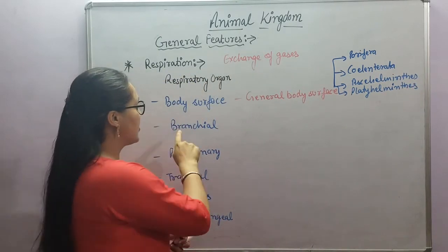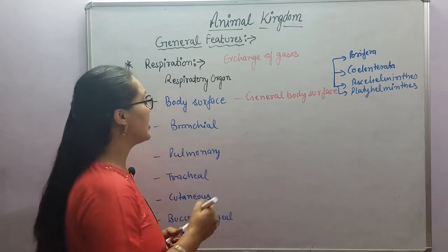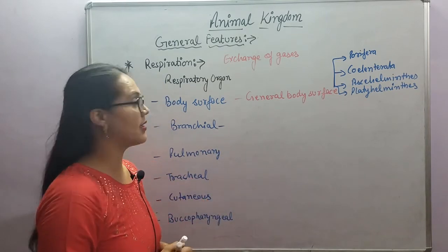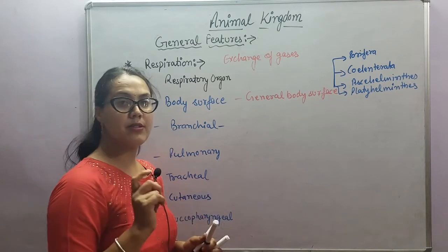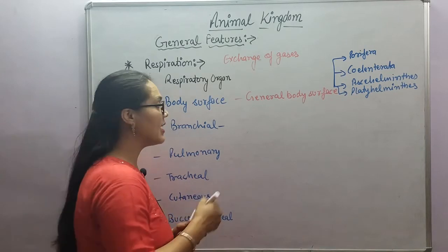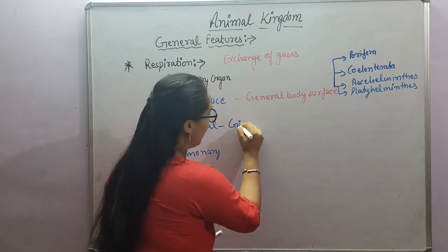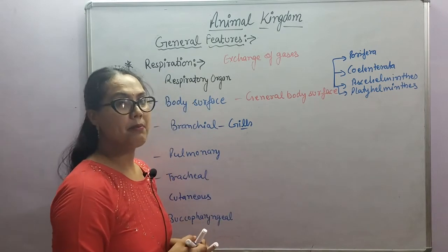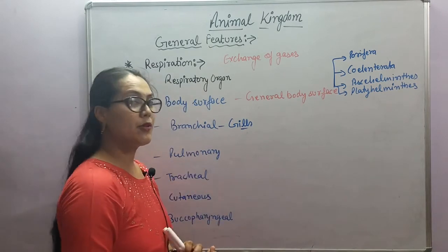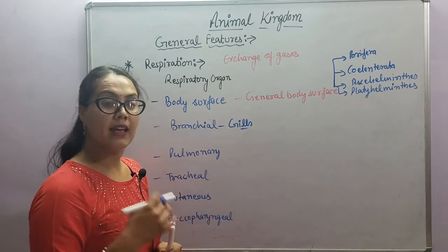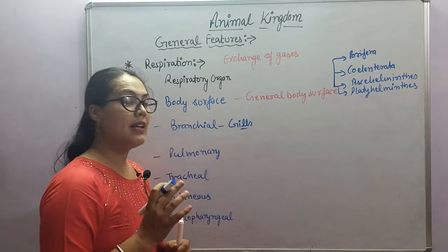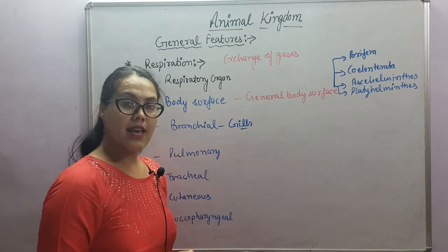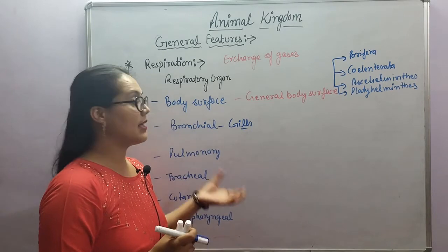The second type is branchial respiration. The term branchial is associated with gills. Animals which have gills exhibit branchial respiration. Gills are found in aquatic animals.